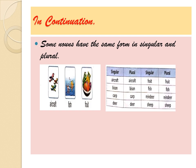Rule eight: some nouns have the same form in both singular and plural. There are some words which never change from singular to plural. For example: aircraft, deer, fruit, fish, reindeer, sheep. These nouns never change into plural — they remain the same.